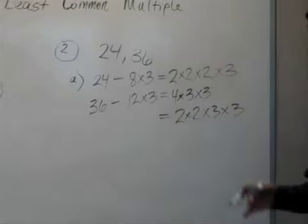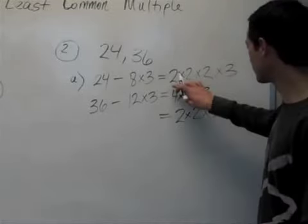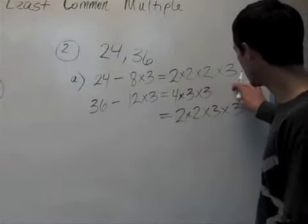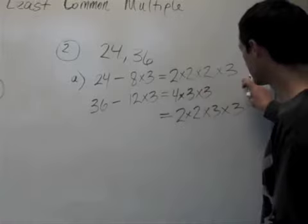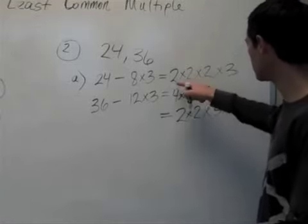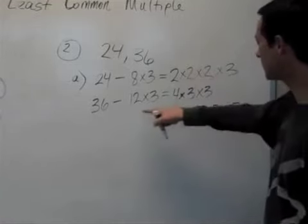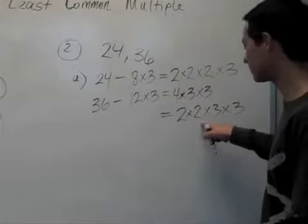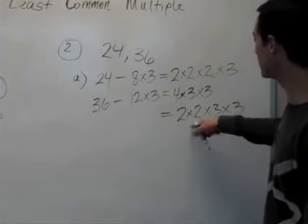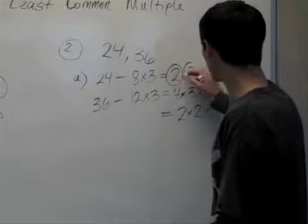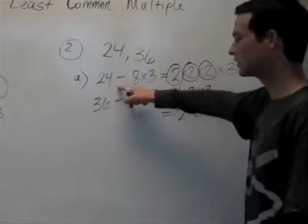Now we look for the greatest number of 2's, and that's either in 24 or 36. So there's how many 2's here? 1, 2, 3. And how many 2's in 36? 1, 2. So we're going to choose the three 2's from the 24.